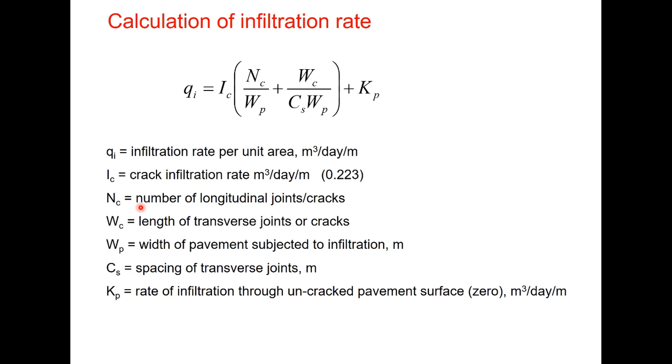Ic is the crack infiltration rate in meter cube per day per meter and IRC suggests a default value of 0.223 to be used in this equation. Nc is the number of joints or cracks that will depend upon the number of lanes. Wc is length of transverse joints that will depend upon the width of the pavement. Wp is the width of the pavement subjected to infiltration that is the carriageway plus hard shoulders and Cs is the spacing of transverse joints generally 4.5 meter and Kp is rate of infiltration through uncracked pavement surface which can be assumed to be 0.